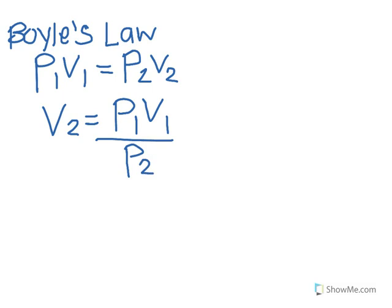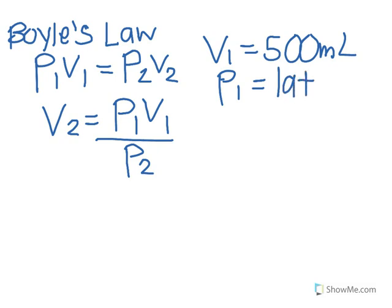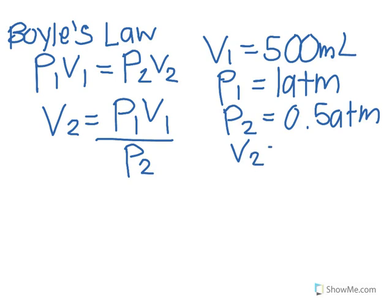In this equation, V1 equals 500 milliliters. P1 equals 1 atmosphere. P2 equals 0.5 atmospheres. And we're trying to find V2.